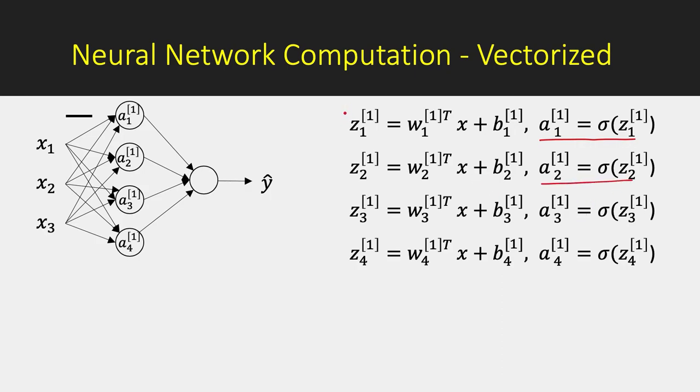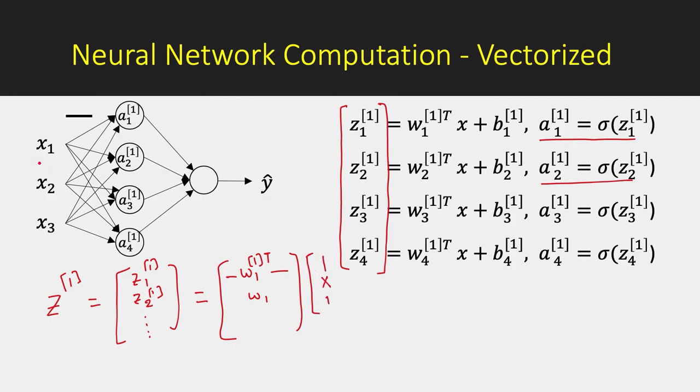Now we need to vectorize it. We cannot run for loop since the number of neurons can be large. So we will call this vector as capital Z^[1]. So we have removed the subscripts. This will take care of all the neurons in a given layer. So this vector is z^[1]_1, z^[1]_2, and so on. And then this will be having all these values w^[1]_1 transpose times x. So we will write x separately. X is this three dimensional vector, x1, x2, and x3.